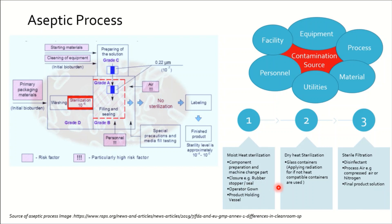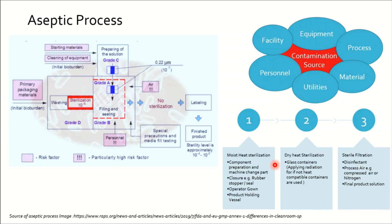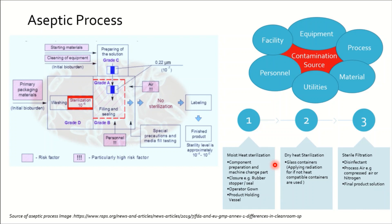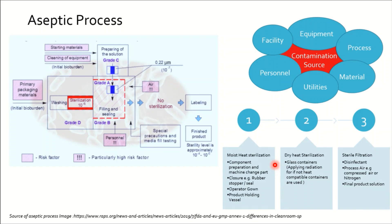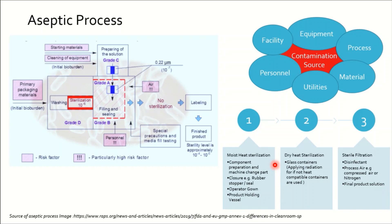When discussing different sterilization processes: moist heat sterilization is used for component preparation, machine change parts, accessories, rubber stoppers, seals, operator gowns, and holding vessels. Dry heat sterilization is used for glass containers, although radiation can be applied for compatible containers per product requirements. Filtration sterilization is used for disinfectants, process nitrogen or compressed gas, and the final product solution.